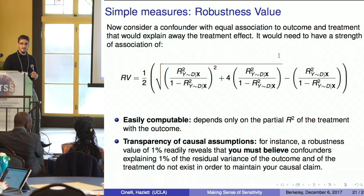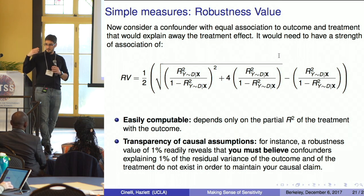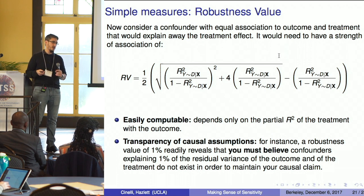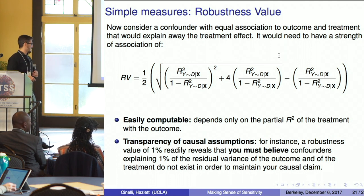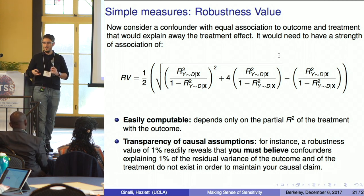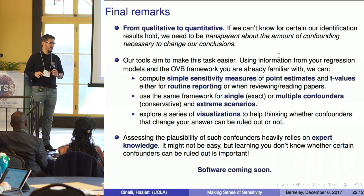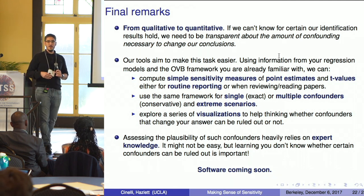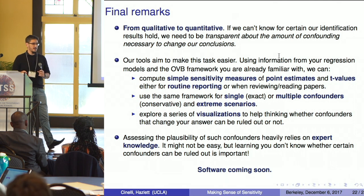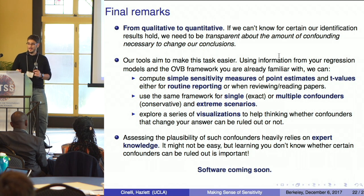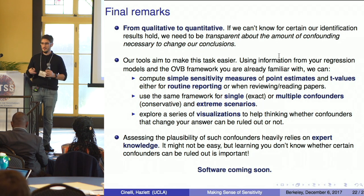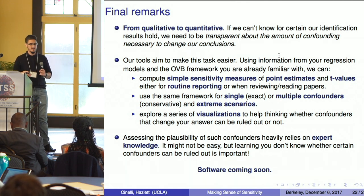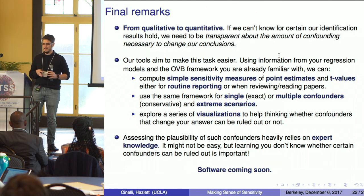This is useful because it's easily computable from the regression table and gives immediate transparency about causal assumptions. If the robustness value is 1%, you need to believe there is nothing out there explaining 1% of the treatment and 1% of the outcome for your causal claim to hold. If you don't believe that, you have to think twice about making a strong causal inference claim. When dealing with observational data or imperfect experiments, we need to be transparent about causal assumptions — moving from qualitative to quantitative discussion.